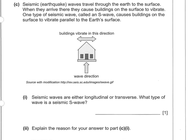Part C. Seismic or earthquake waves travel through the earth to the surface, where they cause buildings to vibrate. One type, called an S wave, causes buildings to vibrate parallel to the earth's surface. What type of wave is a seismic S wave? The vibration direction is perpendicular to the wave direction — that's the definition of a transverse wave, where vibration is at 90 degrees to the wave direction. So the answer is transverse.